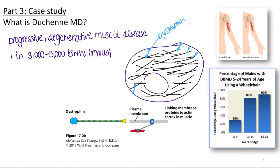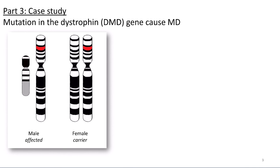Muscular dystrophy is an X-linked recessive disease. That is why the statistic I gave about births affected was with respect to males — males have one X chromosome, whereas females have two. As with many other X-linked diseases, we see a higher proportion of biological males affected. Here is an image reminding us of the X and Y chromosomes found in biological males and females, with the dystrophin gene highlighted in red.